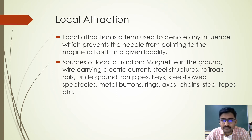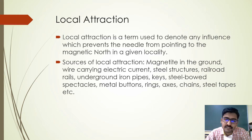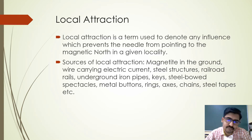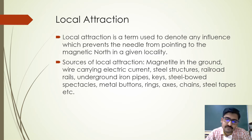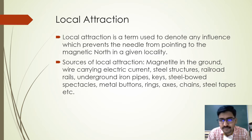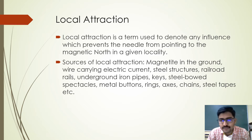The word 'local attraction' is used to denote the influence of such materials which prevent the needle from pointing to the magnetic north. These materials include metals — for example, if you are working with the compass near any compound, the metal grills or metal gate nearby may influence the magnetic needle. Even magnetite present in the ground, which is an ore of iron, can cause the needle to not show the correct north.